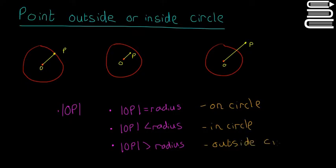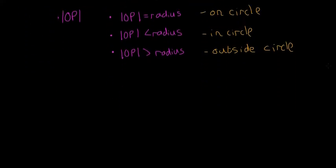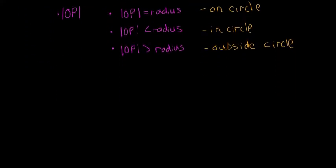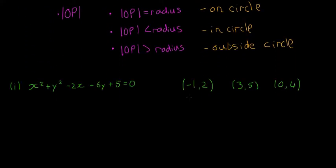Those are the three cases you need to understand. We're going to look at a quick example question. We have this circle here: x squared plus y squared minus 2x minus 6y plus 5 is equal to 0, so it's in the general form.